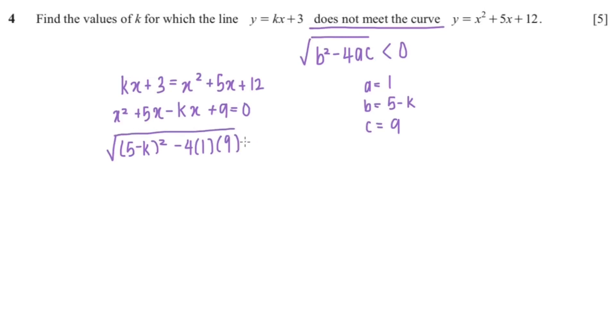and the square root of the whole thing is less than 0. So that would be square root of 5 minus k squared minus 36 equals 0.